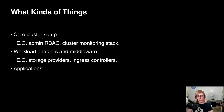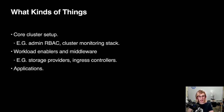What kinds of things do we actually put in a cluster? We have things I'd consider core cluster setup — admin RBAC, the basic monitoring stack, maybe data center or cloud provider integrations — things we probably want everywhere. There's also stuff that's more specific, like storage backends, ingress controllers for specific applications or teams, operators or frameworks like something to run Spark. And then most importantly, we have the applications that make our business money. We need to deploy those too.